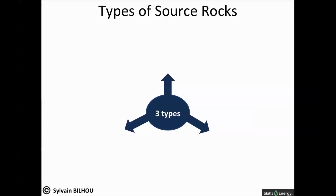Source rocks are variable and all differ one to another. They are classified from the origin of the organic matter they contain, and have been classified into three types.